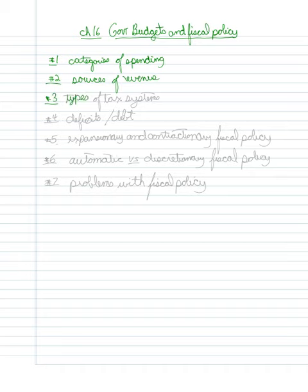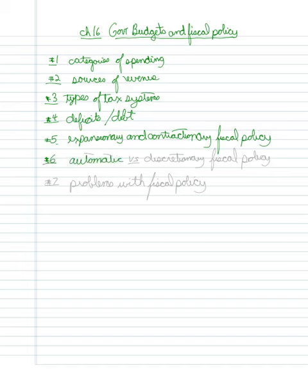In number three, I want to look at the types of tax systems that exist. In number four, I want to look at deficits and the debt and how those are different. Then I want to look at expansionary and contractionary fiscal policy, automatic versus discretionary fiscal policy, and finally the problems with fiscal policy.